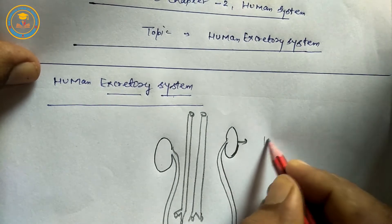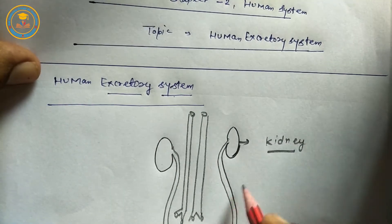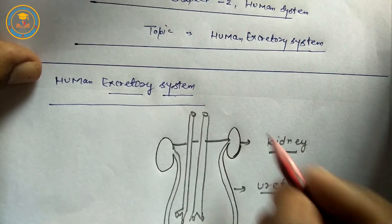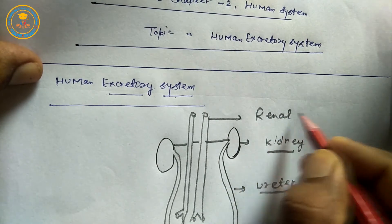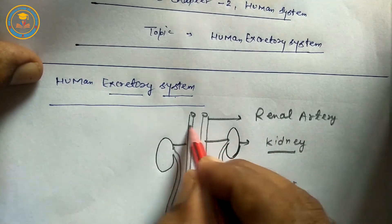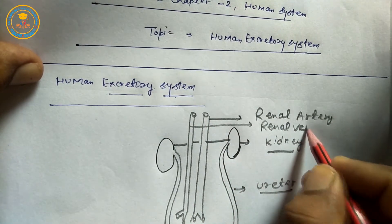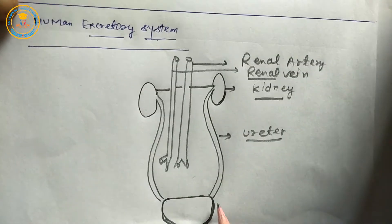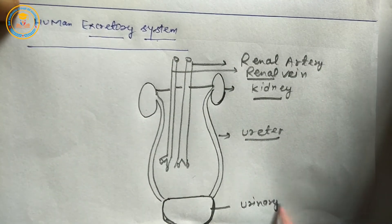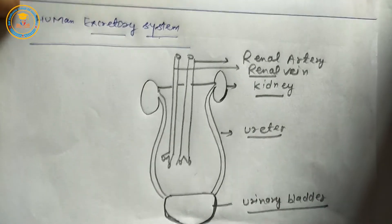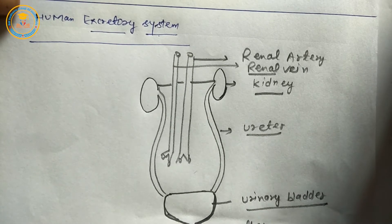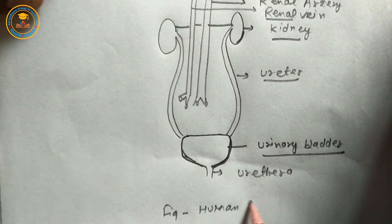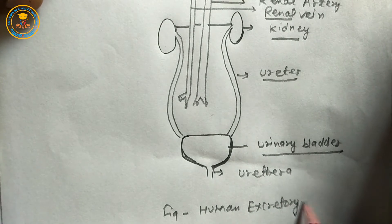This is the kidney. This is the ureter. This is the renal artery. This is the renal vein. Students, another name of kidney is renal. Next is urinary bladder. This is the urethra, and this is the figure of the Human Excretory System.